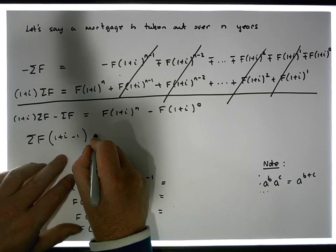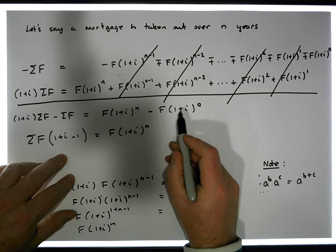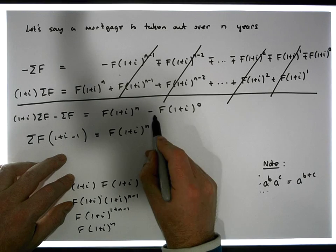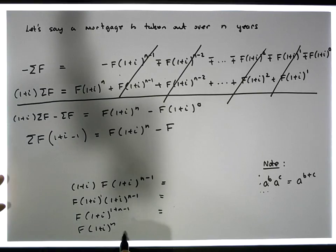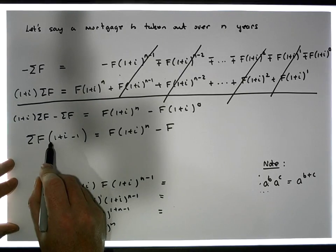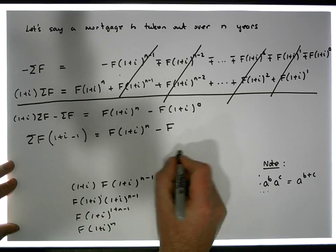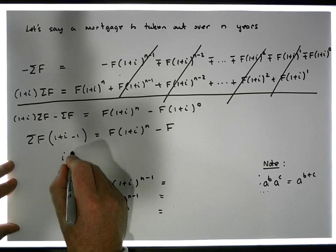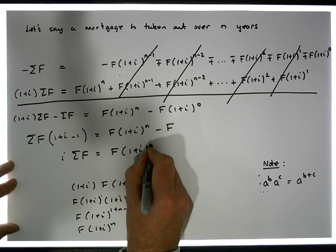be equal to F times one plus i to the n. Any number raised to the power of zero is one, so this just becomes minus F, minus one of our payments. And actually, what you can actually see here is that this becomes one minus one is zero, plus the i gives us i, so this becomes i times sigma F is equal to F times one plus i to the n minus F.